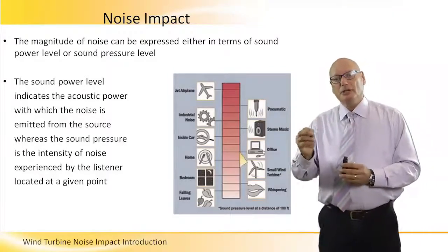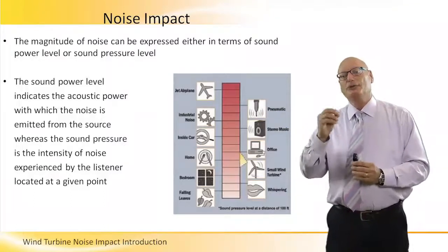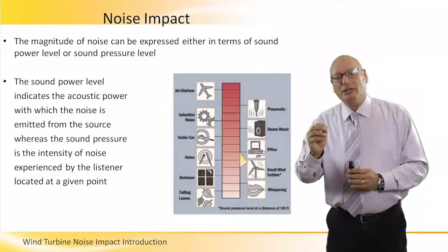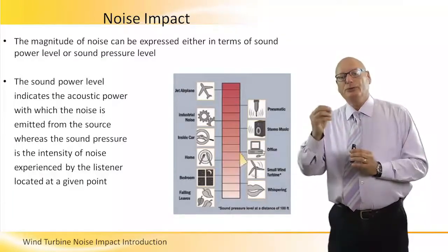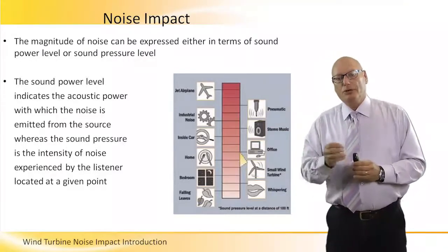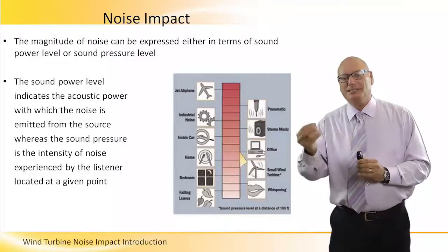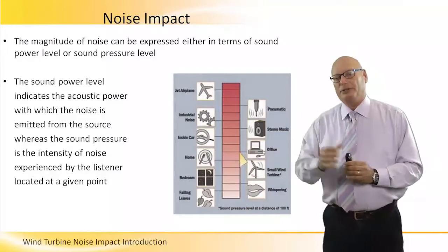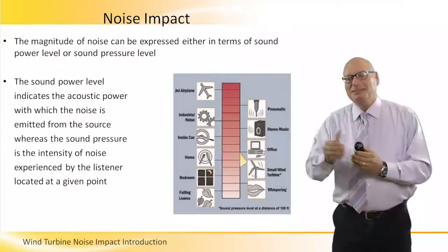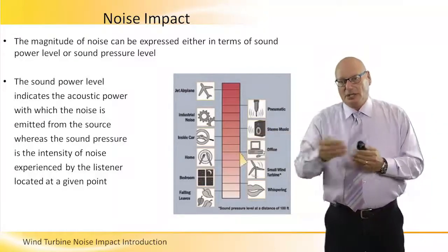We will see the effect of continuous noise in a minute. The magnitude of noise can be expressed either in terms of sound power level or sound pressure level. The sound power level indicates the acoustic power with which the noise is emitted from a source, whereas the sound pressure level is the intensity of noise experienced by the listener at a given point — in simple words, it depends on the distance between the sound source, meaning the turbine, and the listener.